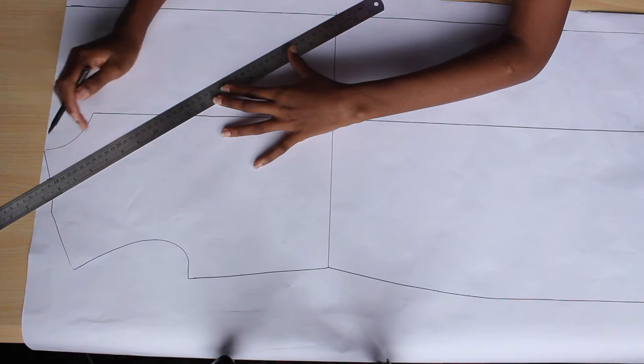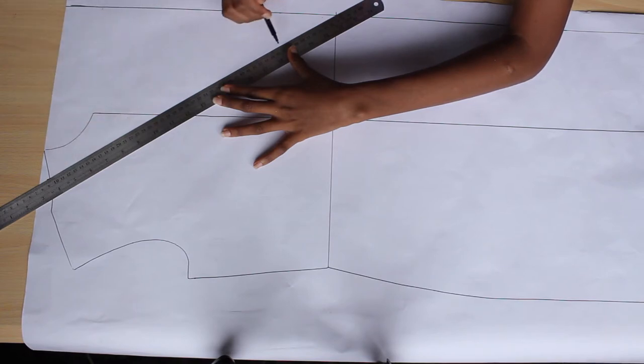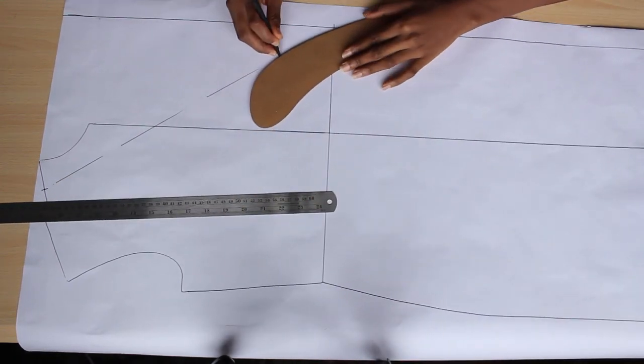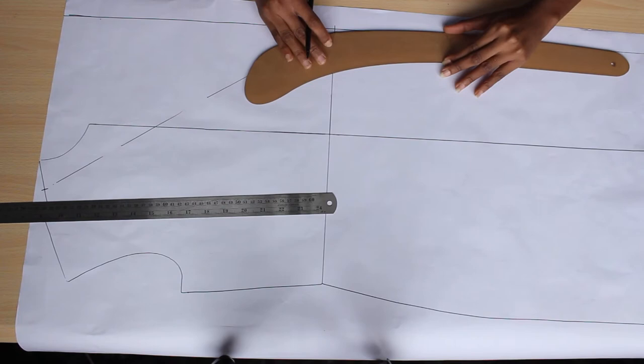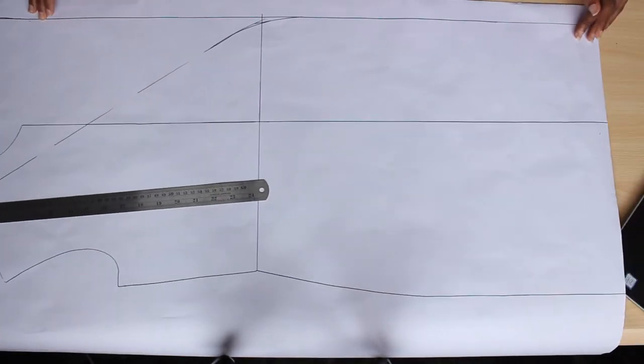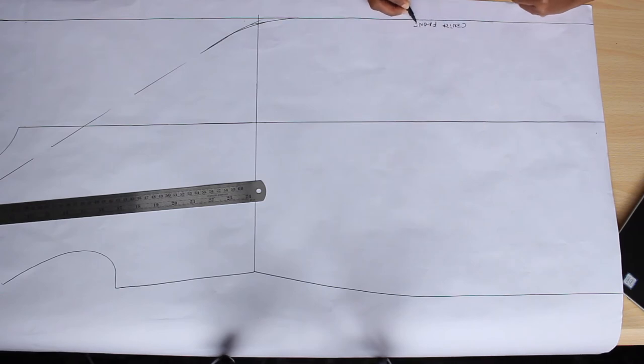I'm using my curve to just eliminate any sharp edges and smoothing out the transition from the upper part to the lower part. This is my center front, I'm labeling it.